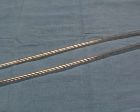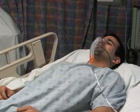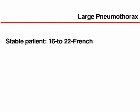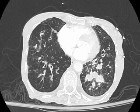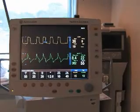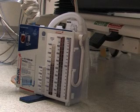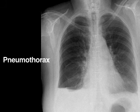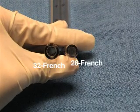Choosing the size of chest tube is based on the indications. For a large pneumothorax in a clinically stable, spontaneously breathing patient, tubes with an internal diameter of 16 to 22 French may be placed. For an unstable patient with underlying lung disease, mechanical ventilation, or anticipated large air leak, larger tubes of 24 to 28 French are recommended. To drain a viscous hemothorax, empyema, or pneumothorax in a mechanically ventilated patient, larger diameter tubes sized 28 to 32 French are more often employed.